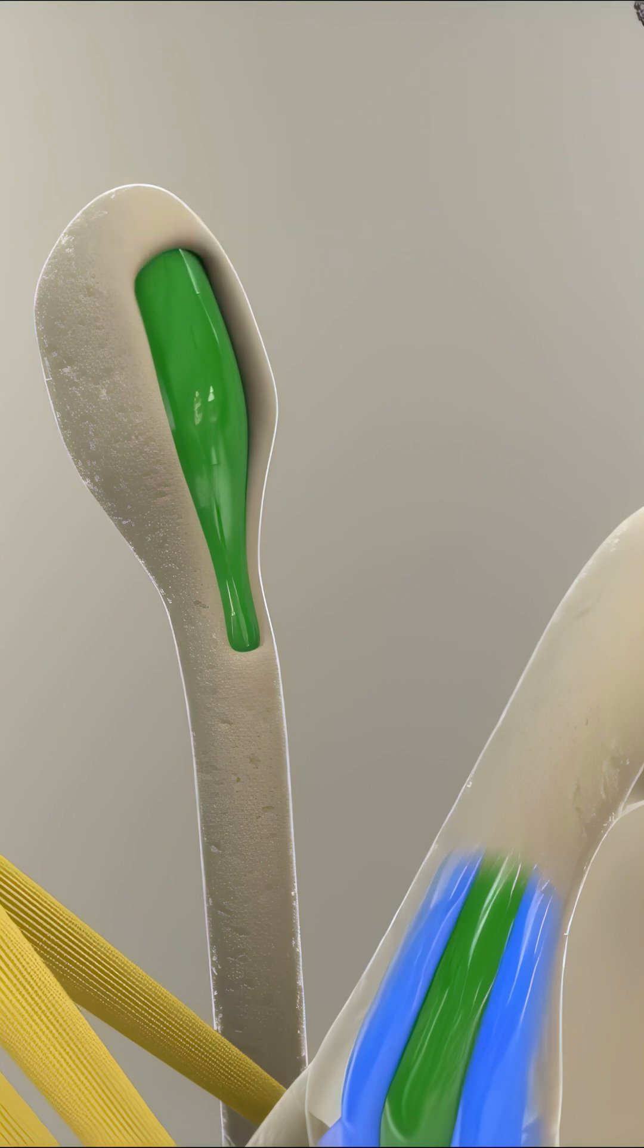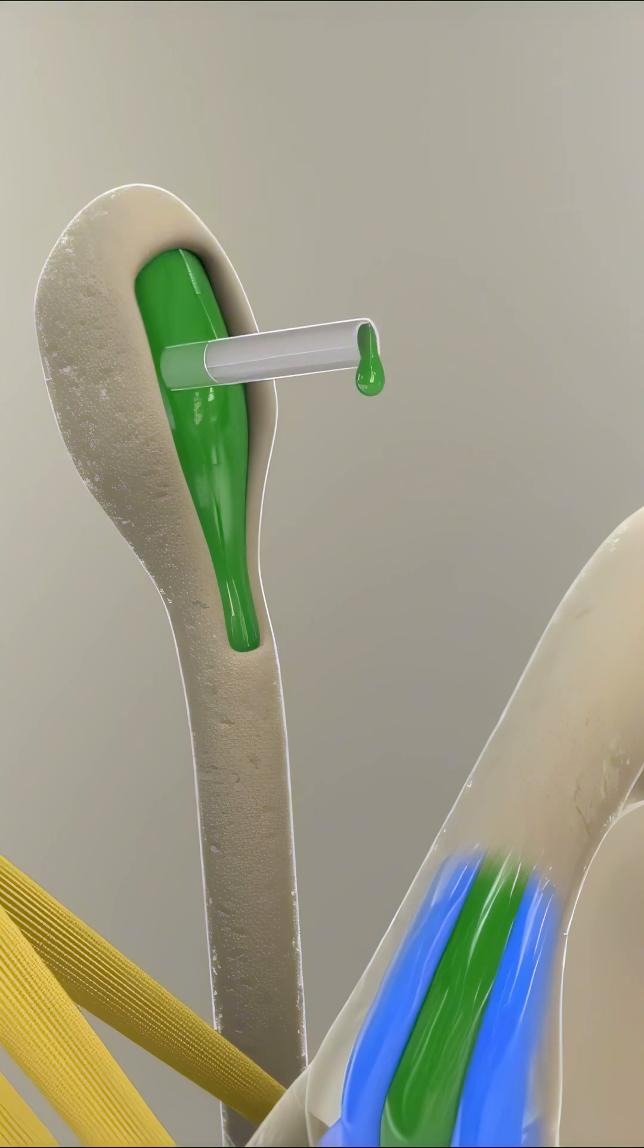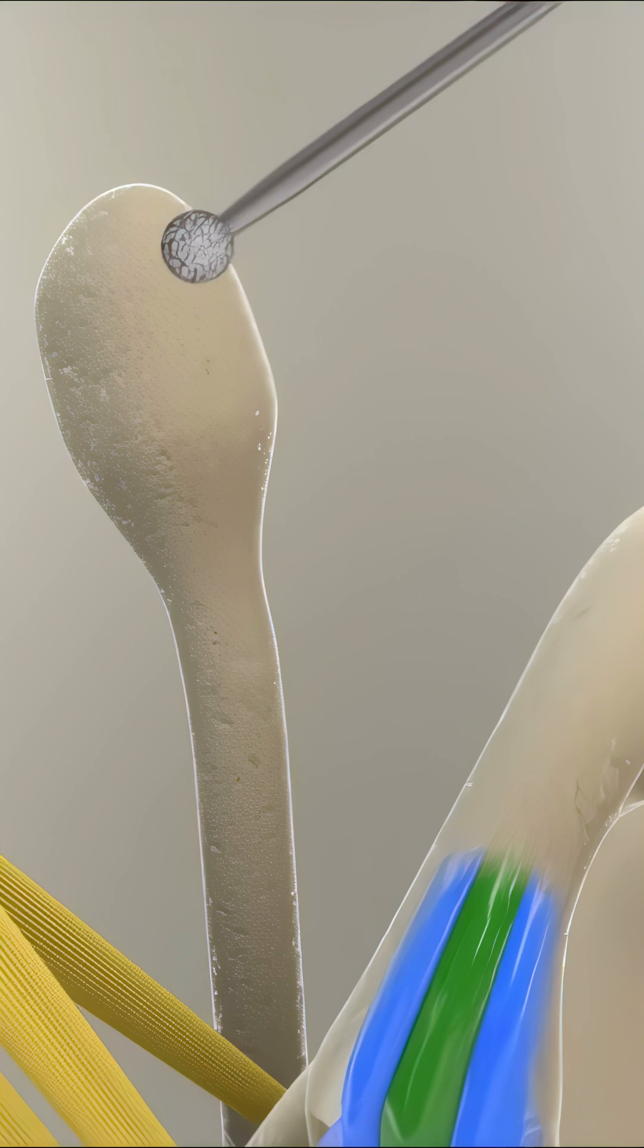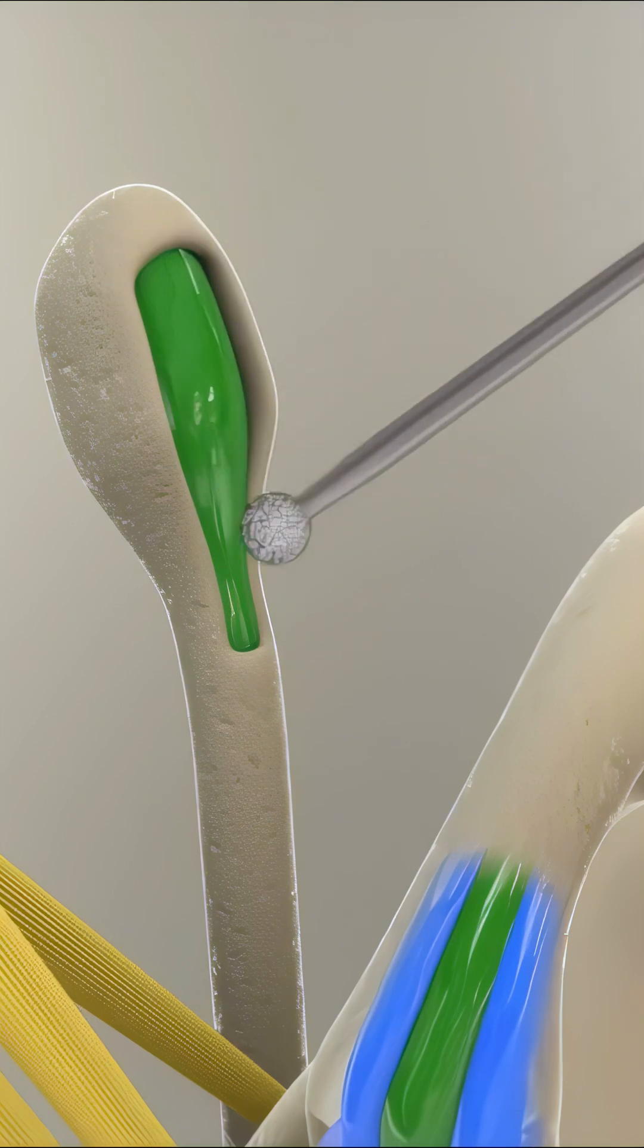If medication doesn't help, surgery might be necessary. In an endolymphatic sac decompression surgery, part of the surrounding bone is removed and a shunt is placed to drain excess fluid and prevent pressure buildup.